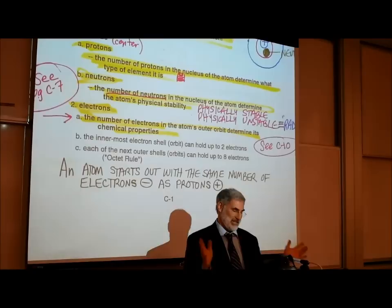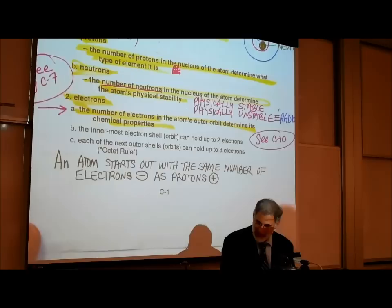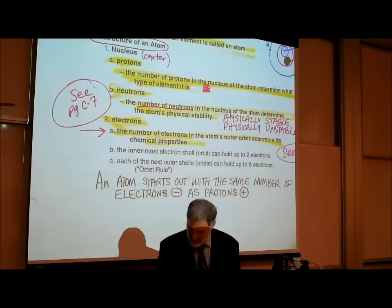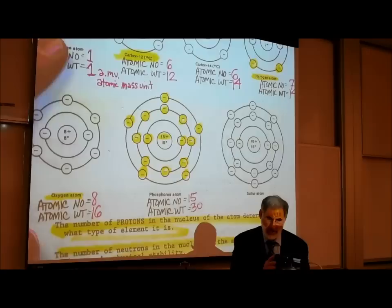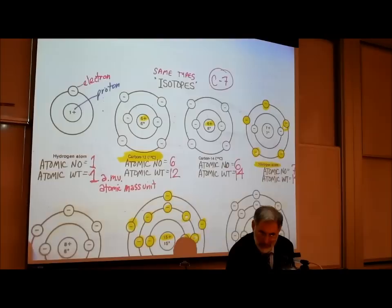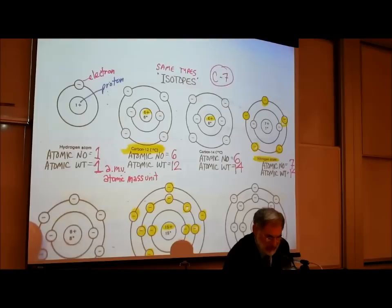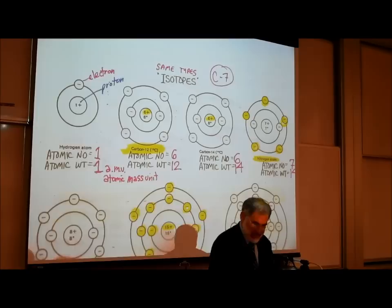Let's take a look at a picture on page C7. Page C7 has pictures of atoms. The very simplest type of atom there is — this is as simple as they get.